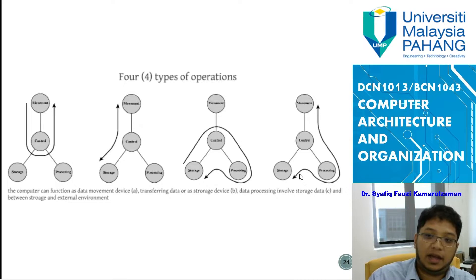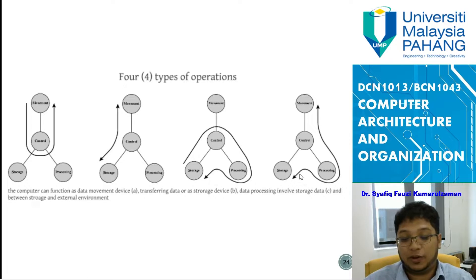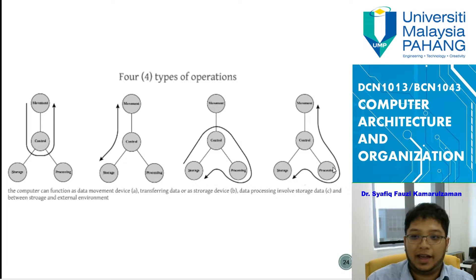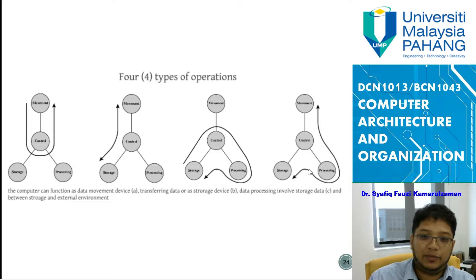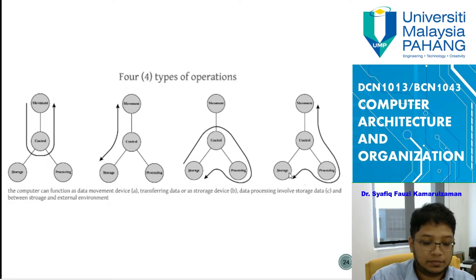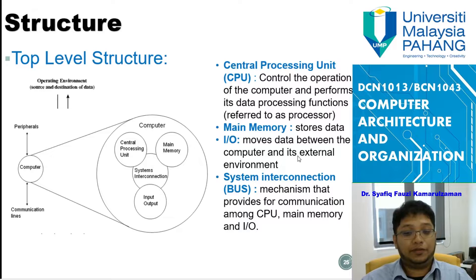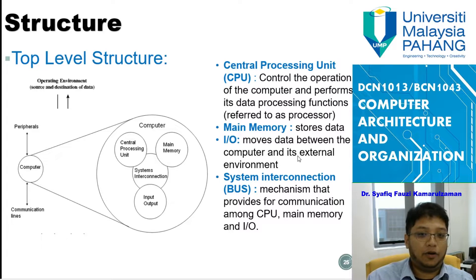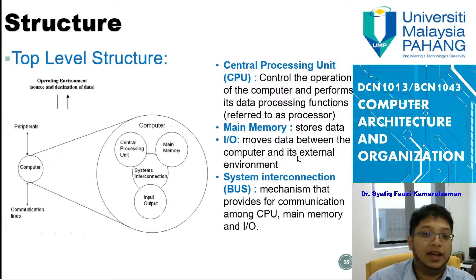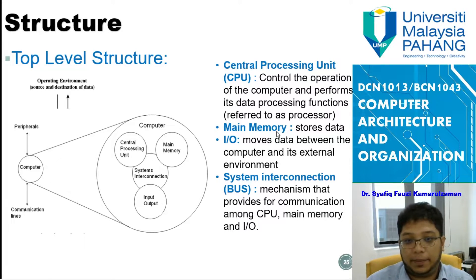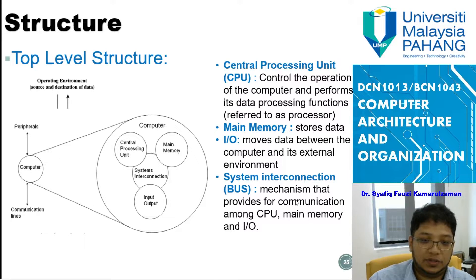For data processing, if you want to convert a Word document into PDF, the document goes from storage to the control unit, gets processed to change it to PDF, and is saved back to storage. For processing data from the external environment, it's like recording a video — the camera captures from outside, processes the video being shot, and finally saves it as a video file in the PC. The four structural components of a computer are: the CPU, main memory, input/output, and the bus (system interconnection).